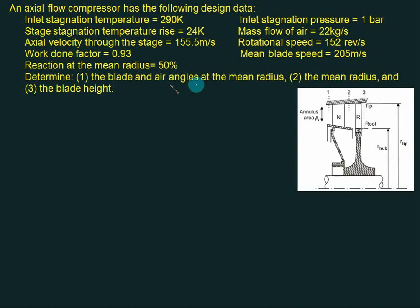We have to find out the blade and air angles at the mean radius, the mean radius itself, and the blade height. In the figure, we have the radius of the hub and the radius of the tip, so the mean radius will come somewhere in between. We have to calculate this mean radius.